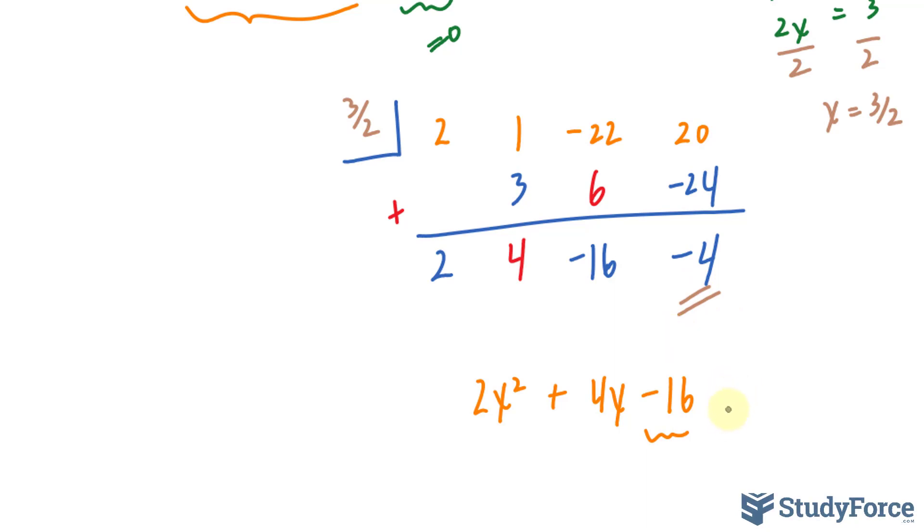The way you write that is you would say plus, and in parentheses, negative 4, and you see this value? We write it down as x minus 3 over 2. And the reason why we write down minus 3 over 2 is because if we were to set this equal to 0, we would end up with positive 3 over 2, and that's the number that we had here.